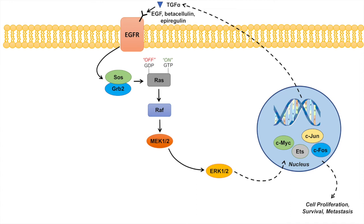Hey everyone, this lesson is on the RAS-RAF-MEK-ERK pathway and its involvement in cancer. We're going to talk about what mutations in particular proteins in this pathway can lead to cancer, the types of cancer caused by dysregulation in this pathway, and chemotherapy drugs we can use to treat these cancers. This is a continuation of my RAS-RAF-MEK-ERK pathway video, so I suggest you watch that first for better background.